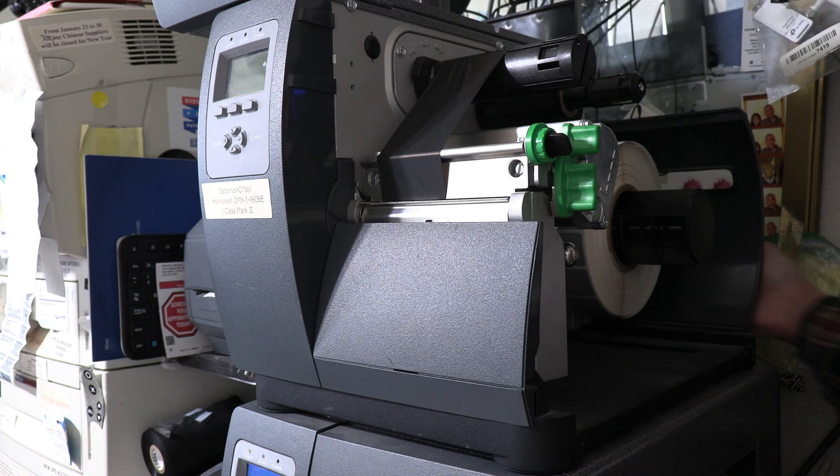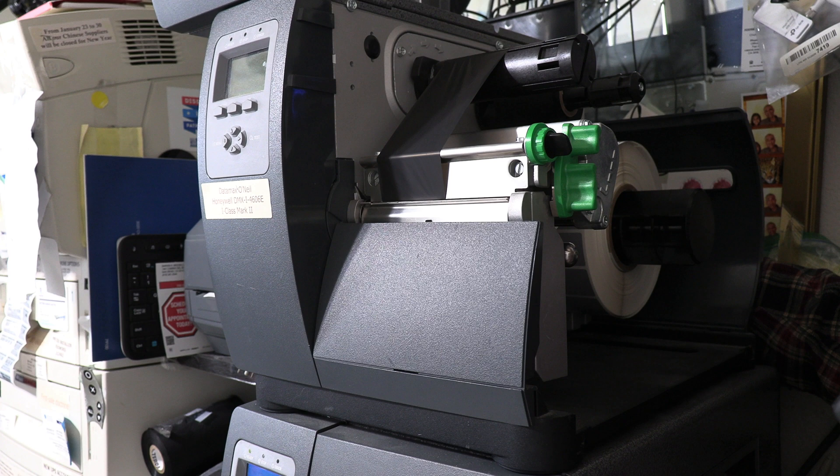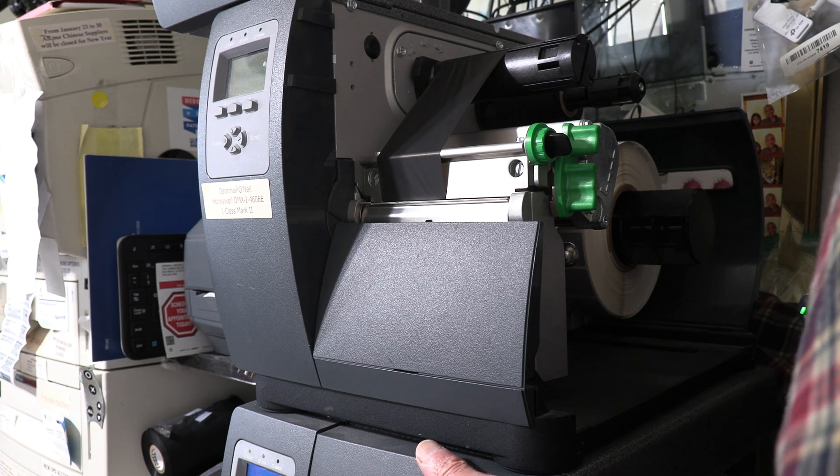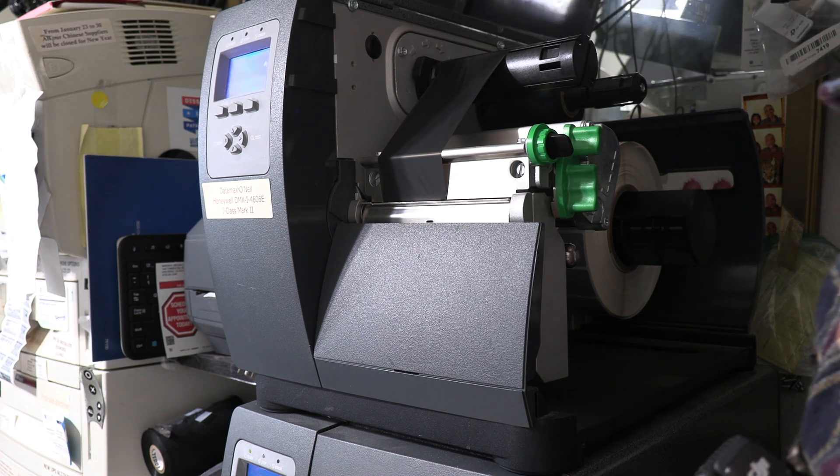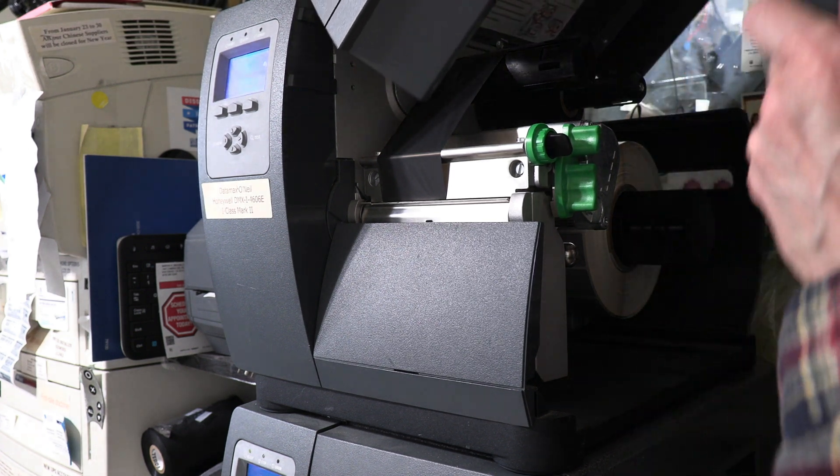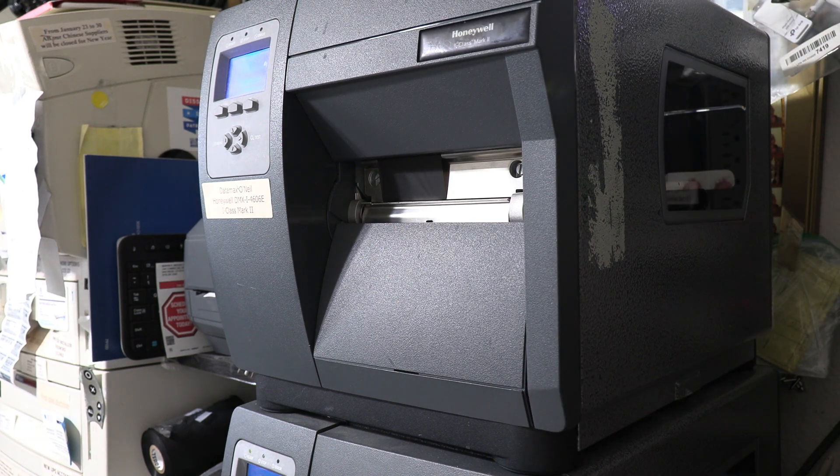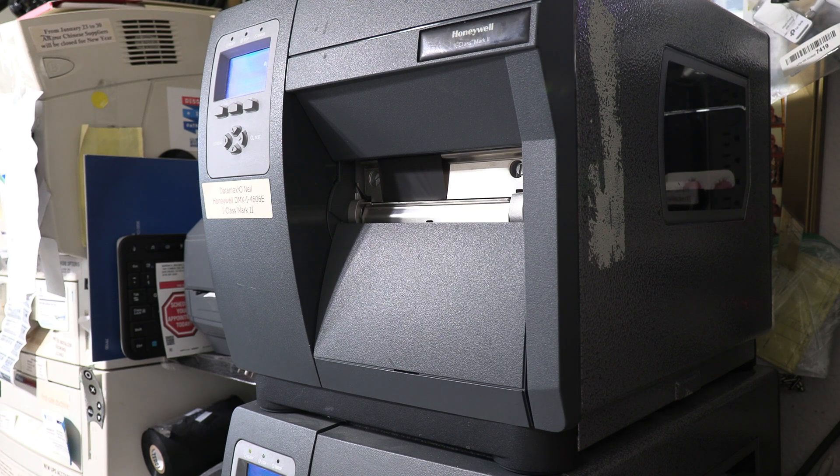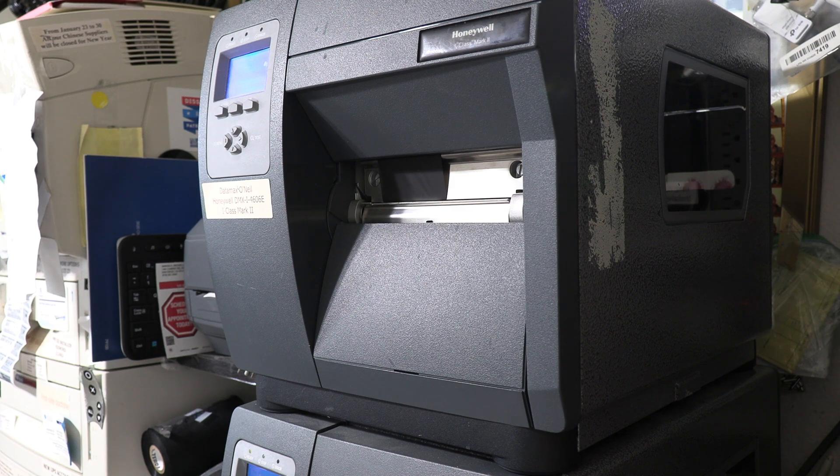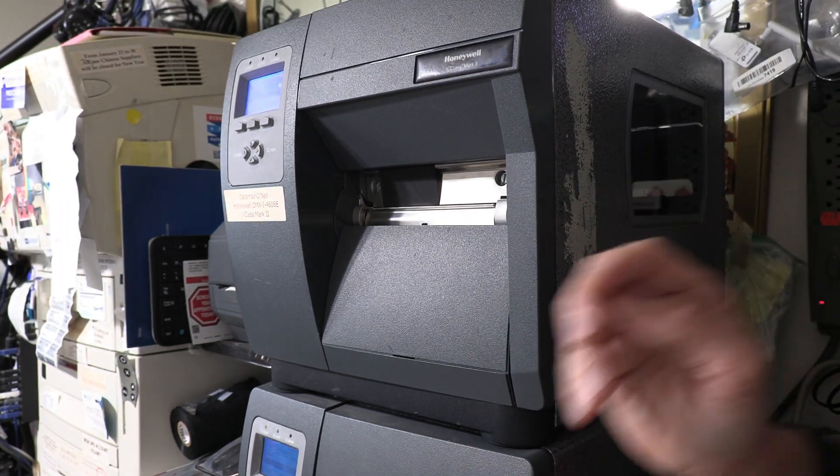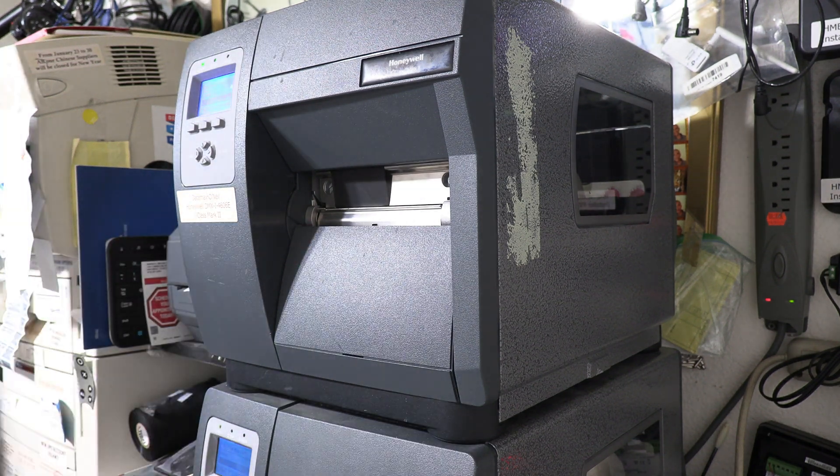We power it back up. Let's see. Okay, so it's powered back up, we close the top, and voila, we just replaced the printhead on a Honeywell Datamax printer. It's just that simple. Now I'm turning it back on, now I'm going to run a test print.